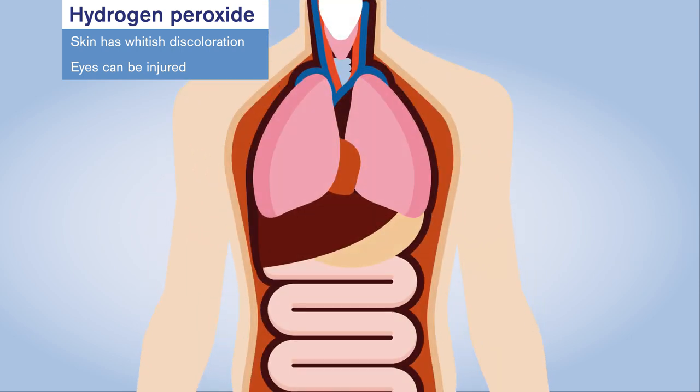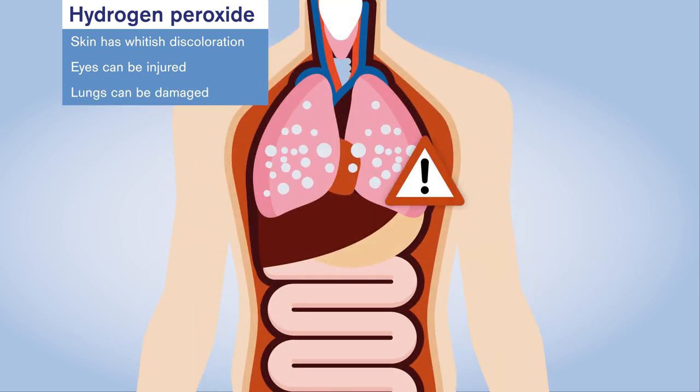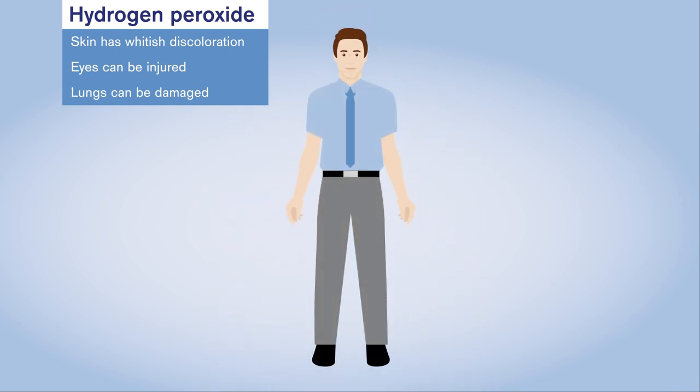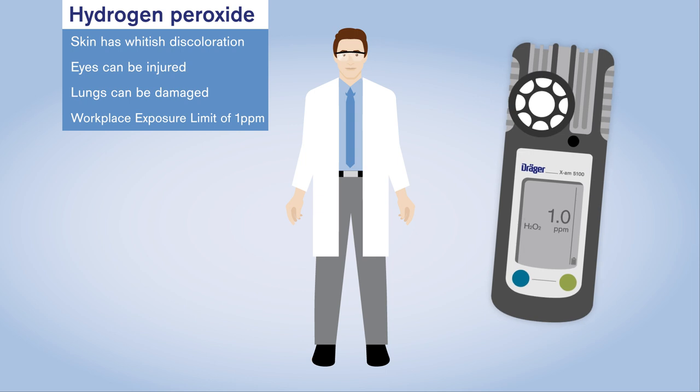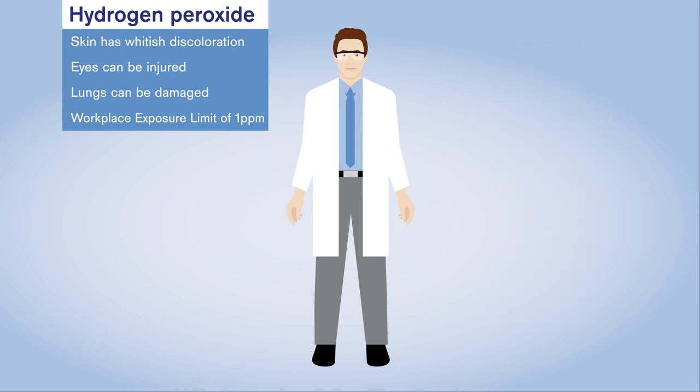And hydrogen peroxide is particularly harmful when inhaled as a vapour and leads to long-term damage to the respiratory organs. That's why many countries impose a strict occupational exposure limit of 1 ppm. In short, this substance carries a number of risks.